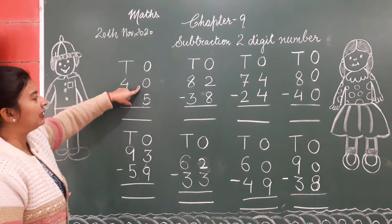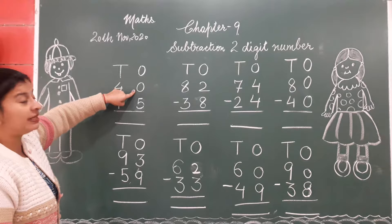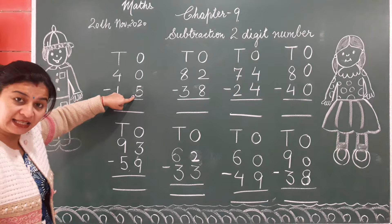Upper number is 0, down number is 5. Listen carefully. Upper number is small, down number is big. We cannot subtract it. Upper number should be big.